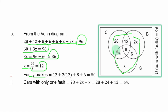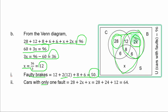Collecting like terms on the left-hand side: 60 + 3S = 96. So 3S = 96 minus 60 = 36, giving S = 12. For part B(i): brakes only is 2S, so the total brakes subset includes 12 + 2S + 8 + 6 = 12 + 24 + 8 + 6 = 50. So 50 cars had brakes issues. For B(ii): cars with only one fault: crush only + brakes only + stereo only = 28 + 2S + S = 28 + 24 + 12 = 64.